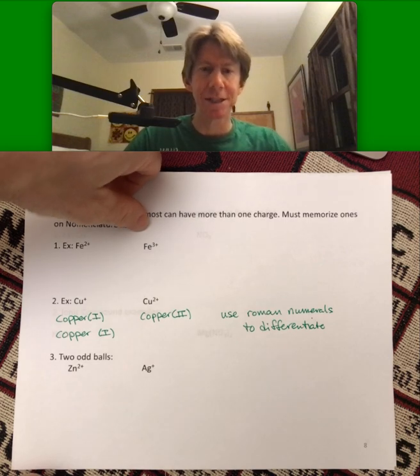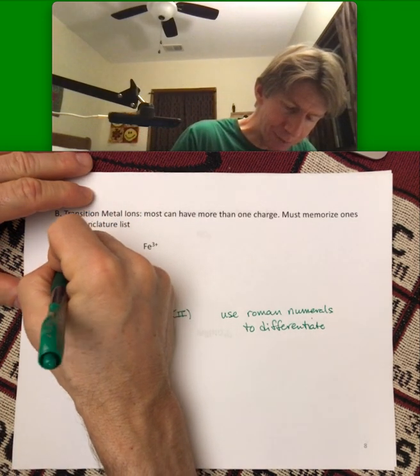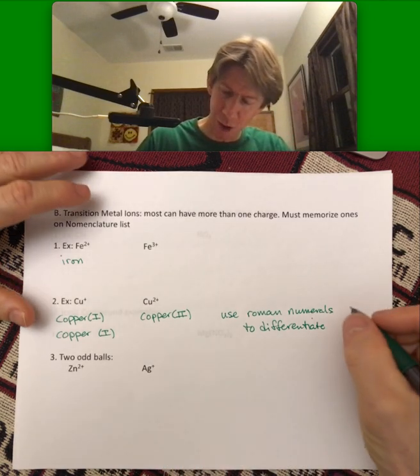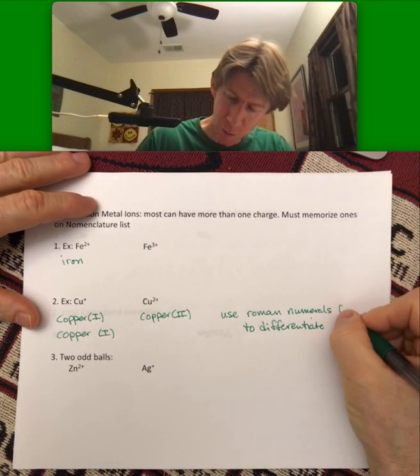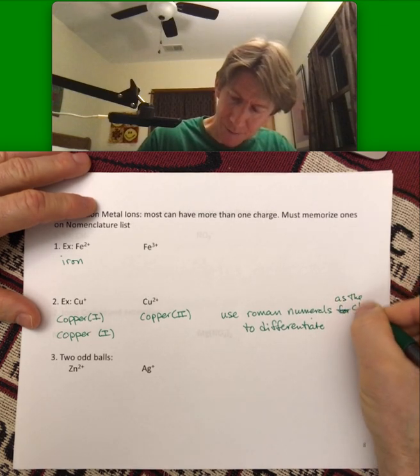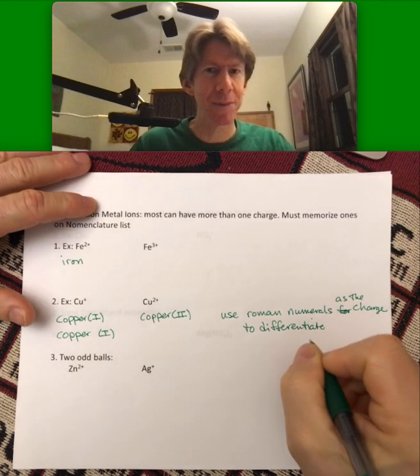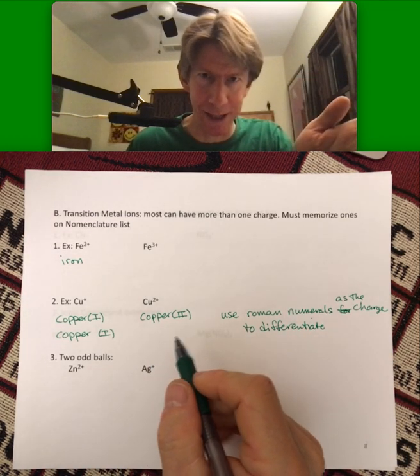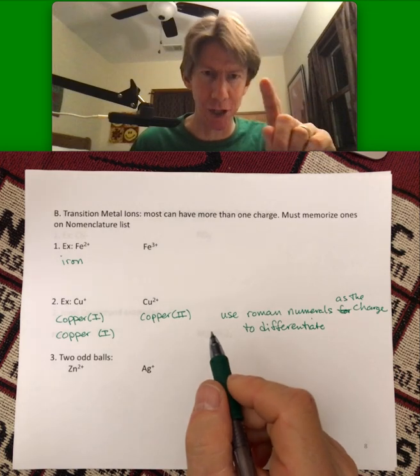For iron, it's two plus and three plus. But whatever the charge is, oh I guess I should say, use Roman numerals for, so as the charge. I hope that makes sense. So it's not how many there are in the compounds. It is the charge.